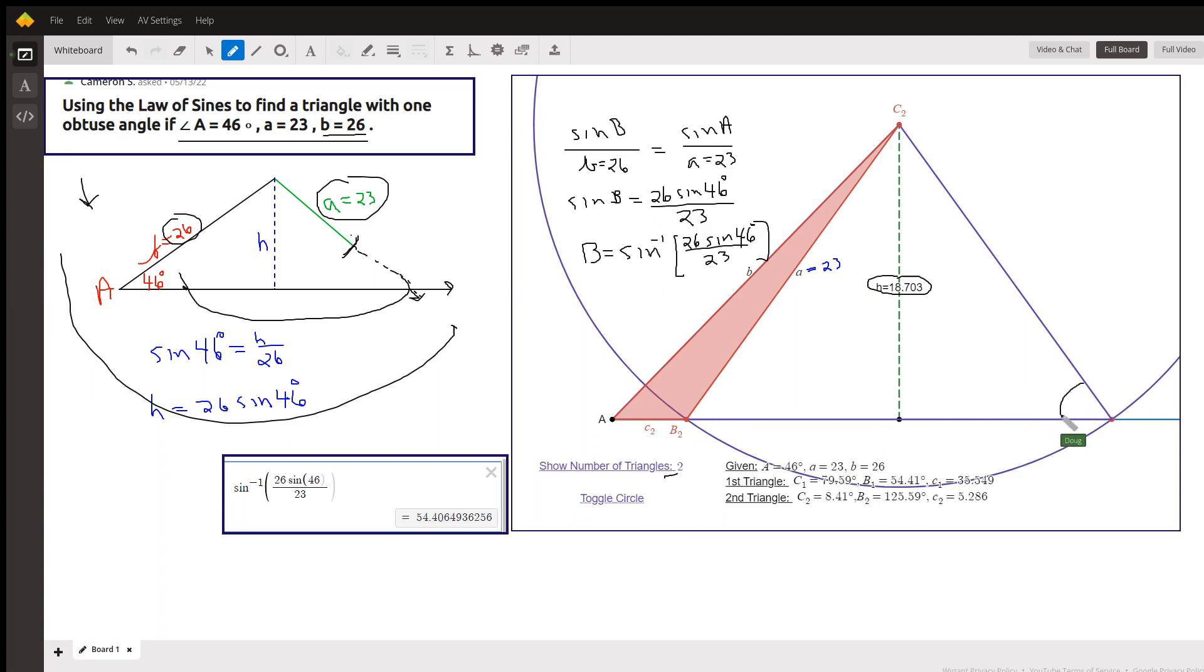Which we're calling angle B. And we can say the sine of big B is to its opposite side 26 as the sine of angle A which is 46 is to its opposite side which is 23.